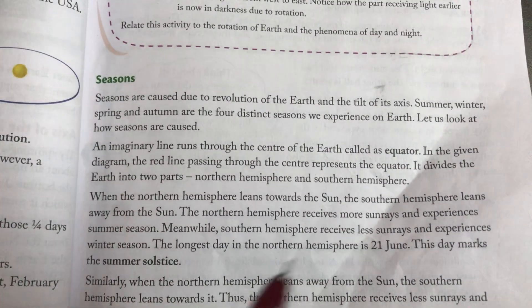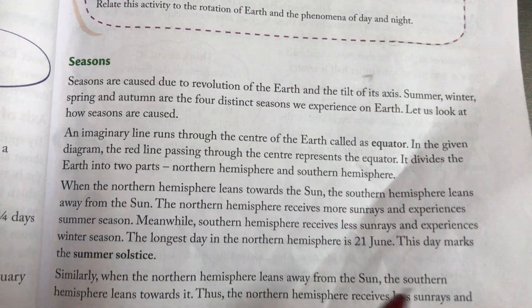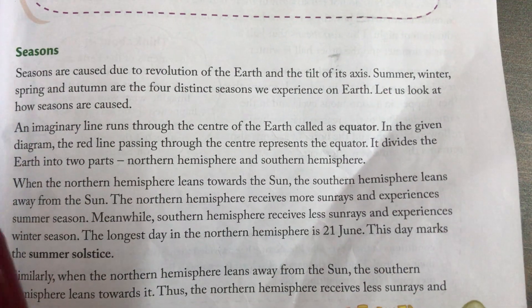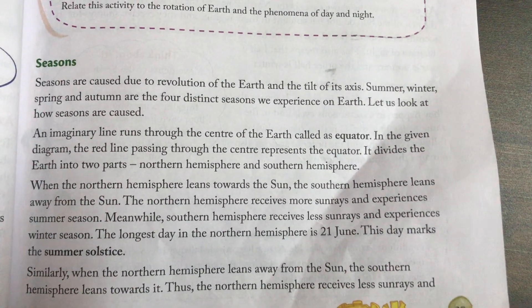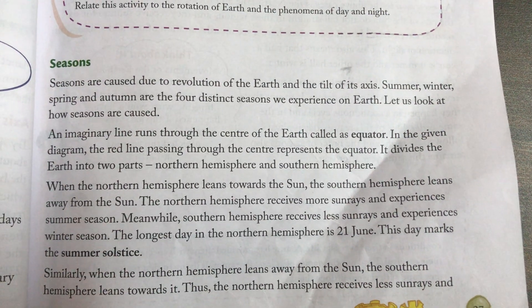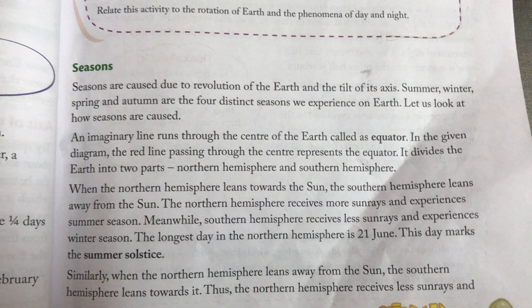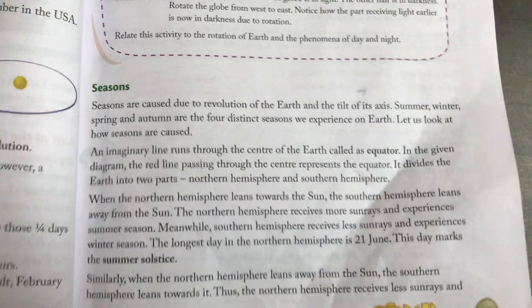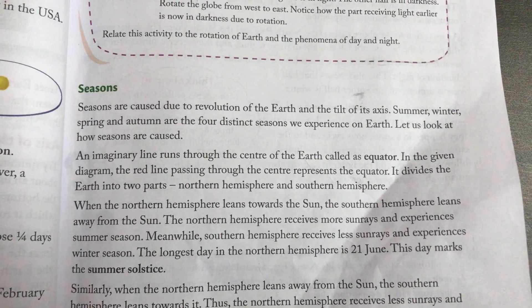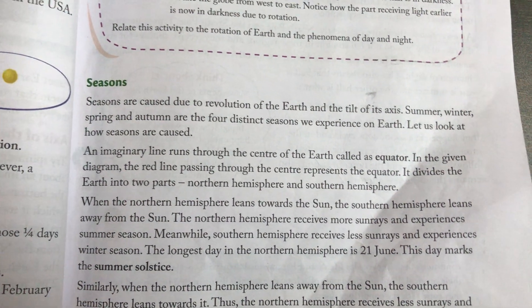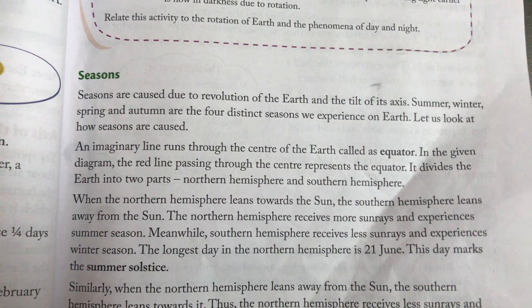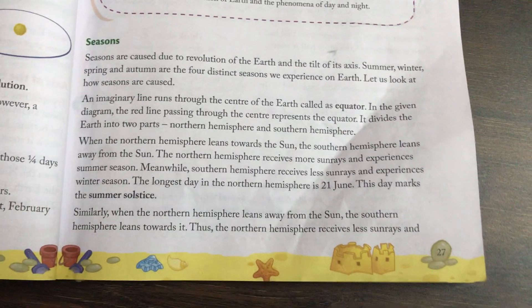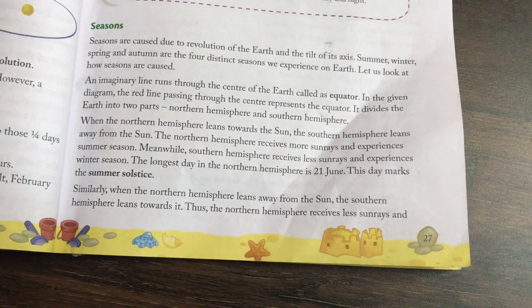If the Northern Hemisphere is tilted toward the sun, then it is warm and the Southern Hemisphere is opposite — it receives fewer sun rays, so there is winter. For example, when it is warm in India, it is winter in Australia. India is in the Northern Hemisphere and Australia is in the Southern Hemisphere.